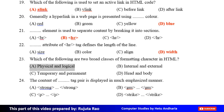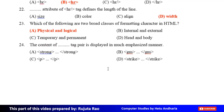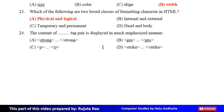The content of dash tag pair is displayed in a much emphasized manner. Option A: Strong tag and slash strong tag, Option B: Em tag and slash em tag, Option C: B tag and slash b tag, Option D: Strike tag and slash strike tag. The correct answer is Option A, Strong tag and slash strong tag.